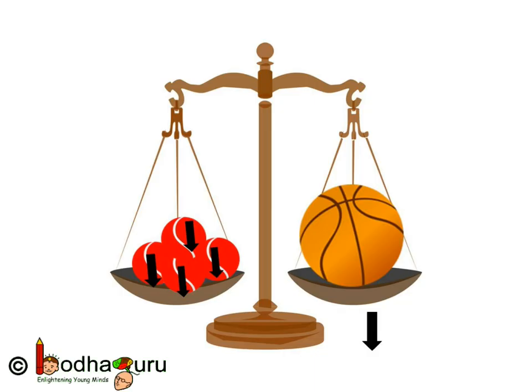So when the two forces balance out each other, the net force becomes zero, which means those forces make no change. Like here, four tennis balls' weight is equal to the weight of a basketball. So we actually balance two forces here. The gravitational pull was pulling the basketball down, but we put four tennis balls on the other pan, and the total weight of the four tennis balls balanced out the weight of the basketball.